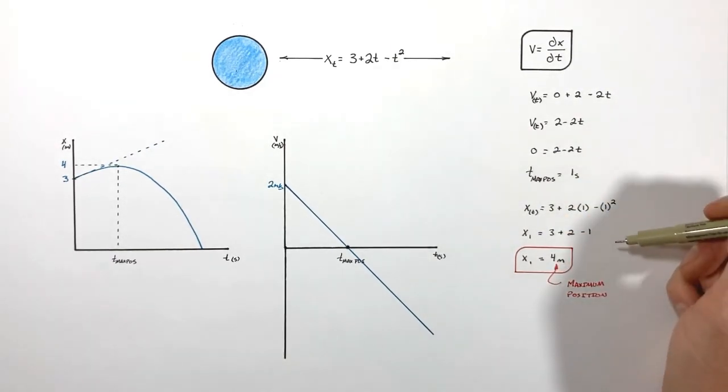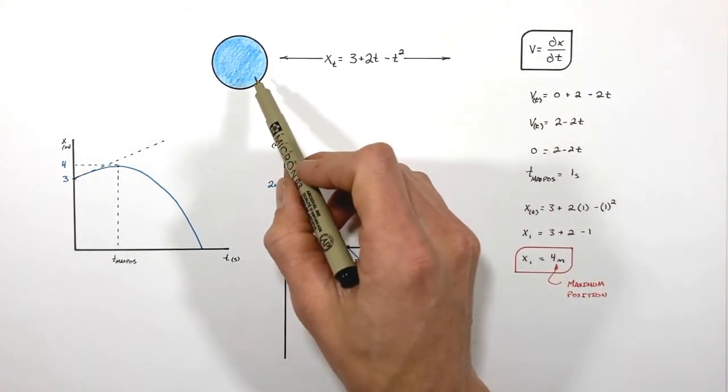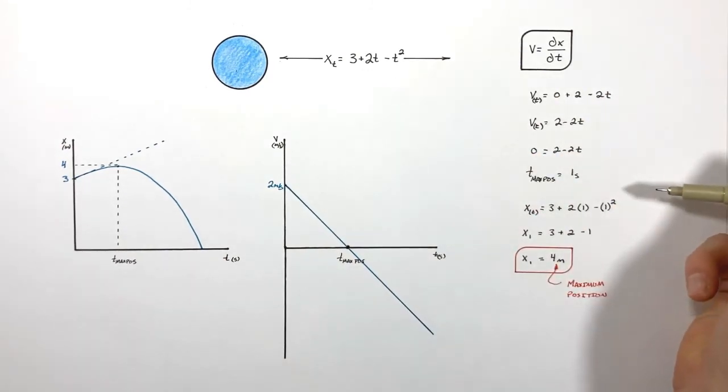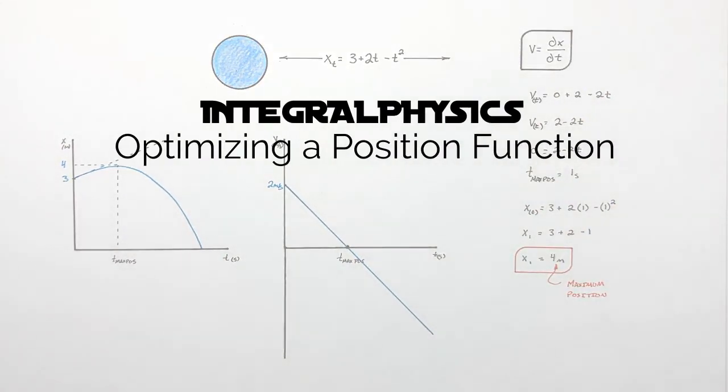So this is how we go through and find the maximum or minimum position which a particle will reach when given its position as a function of time. And on that note, that's all for now.